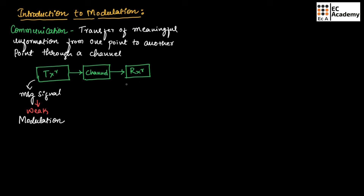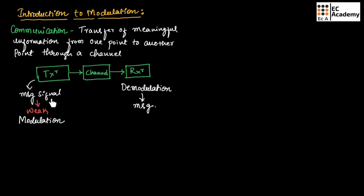That modulated signal will be transmitted over a channel, and the receiver will receive the modulated signal and perform a process known as demodulation to obtain the message signal. At the transmitter end, the message will be modulated and transmitted over a channel, and at the receiver end, demodulation is performed to obtain the original message.